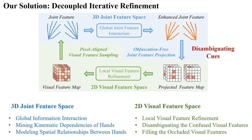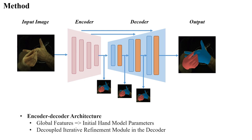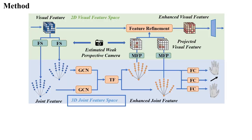We also fill in the absence of visual features caused by mutual occlusion. Overall, we adopt an encoder-decoder framework. We use the global features extracted by the encoder to estimate the initial hand model parameters, and insert the Decoupled Iterative Refinement module into the decoding process. Each module re-predicts the hand mesh for both hands.